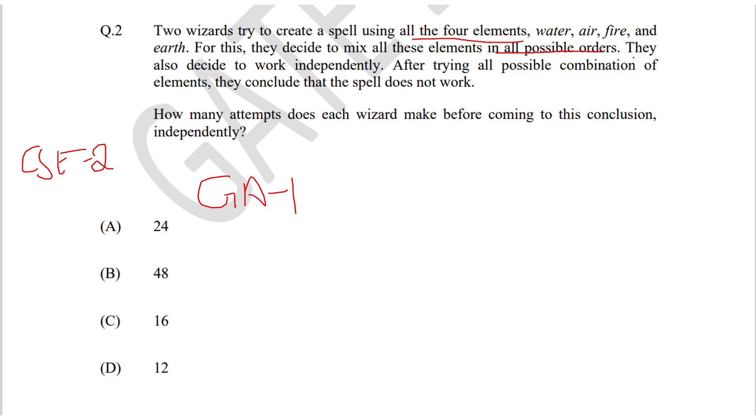They also decide to work independently. After trying all the possible combinations of elements, they conclude that the spell does not work. How many attempts does each wizard make before coming to this conclusion independently?